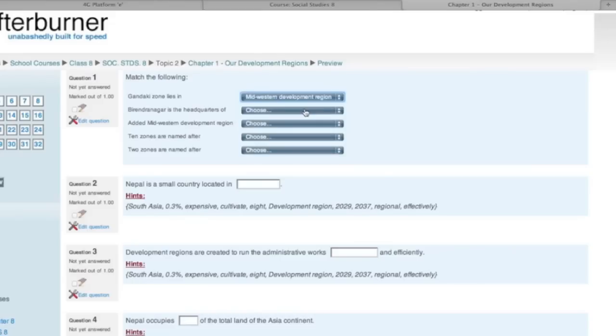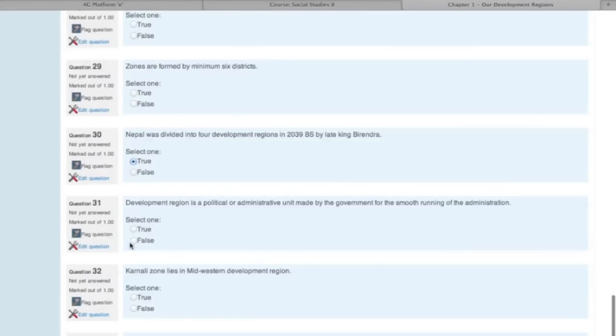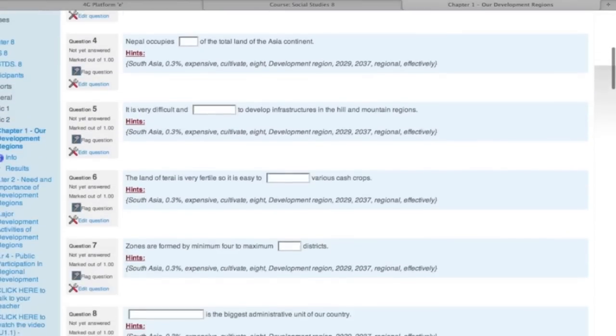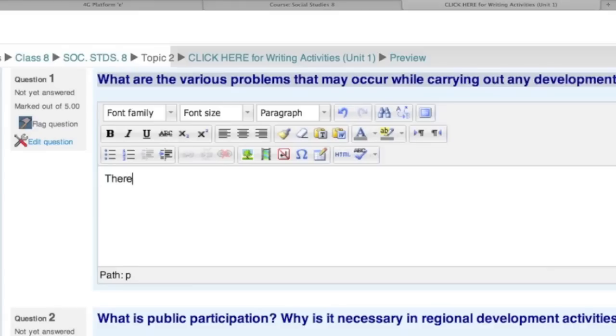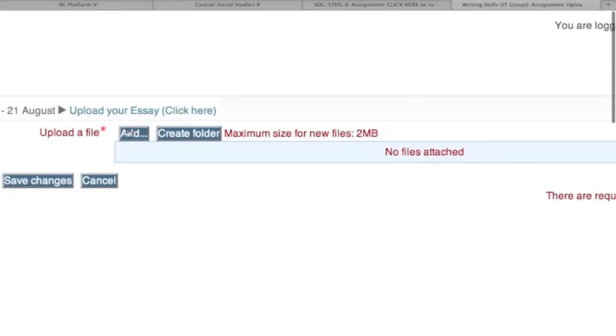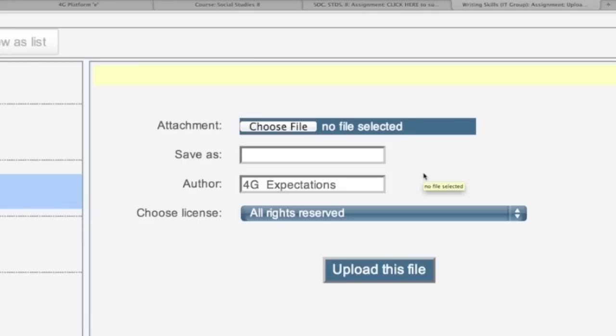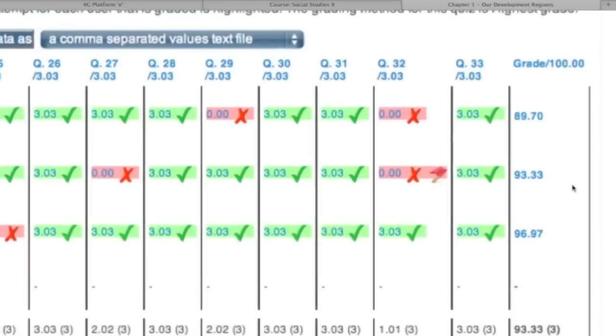One type of activities is the objective questions, such as match the following, fill in the blanks, multiple choice, true and false, and many more other activities according to how the teacher designs the questions. Other types of questions are the writing questions based on each chapter, and the students can write the answers here. Another type of activity is the project work or assignments which they can upload and submit. As you can see here, seven assignments have been submitted so far.